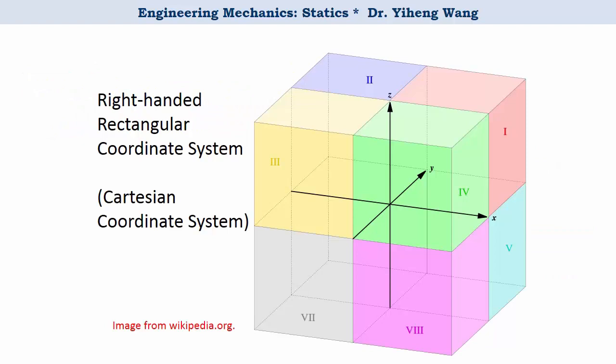The three-dimensional rectangular coordinate system, also known as the Cartesian coordinate system, is made of three number lines that are concurrent, meaning that they intercept each other at the origin, and also perpendicular to each other.